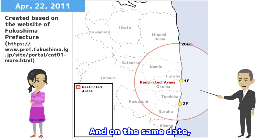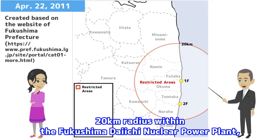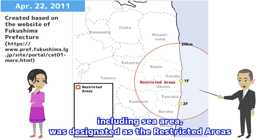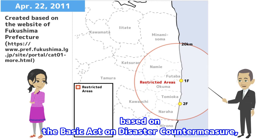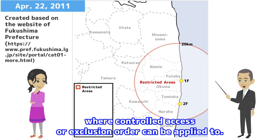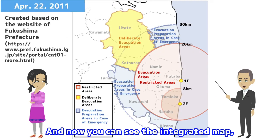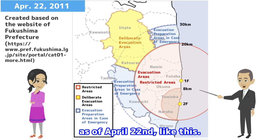On the same date, the 20 km radius around the Fukushima Daiichi Nuclear Power Plant, including the sea area, was designated as the restricted area based on the Basic Act on Disaster Countermeasure, where controlled access or exclusion orders can be applied. And now you can see the integrated map as of April 22.